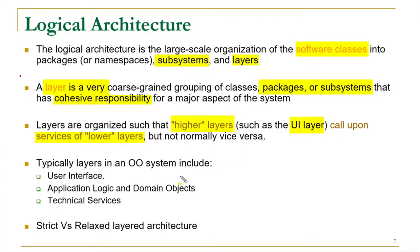Typically, layers in an object-oriented system include a user interface layer, an application logic and domain objects layer, and a technical services layer. This is not an exhaustive list, but some typical layers include the UI layer, the business logic layer, and technical services layers. We can also have scenarios with strict versus relaxed architecture. In strict layered architecture, lower layers do not interact with higher layers, whereas in a relaxed layered architecture, the opposite case may occur.